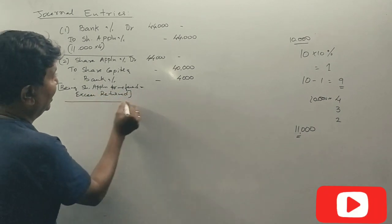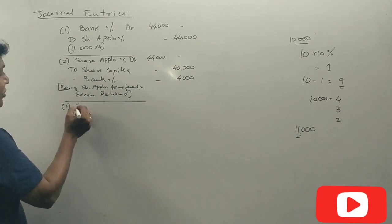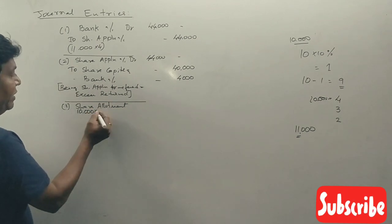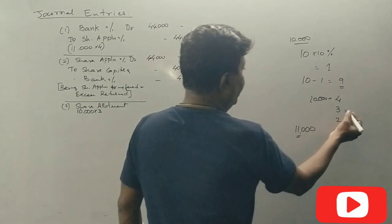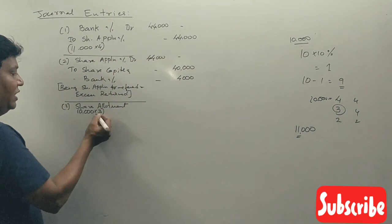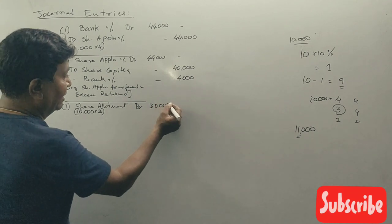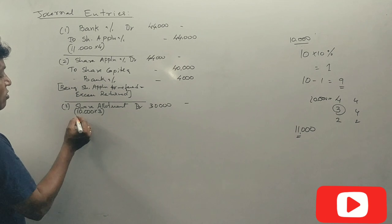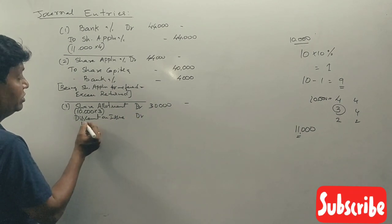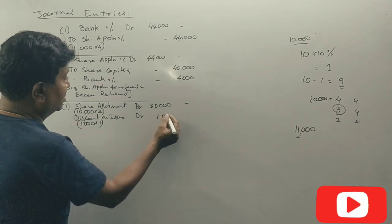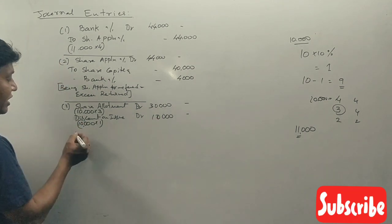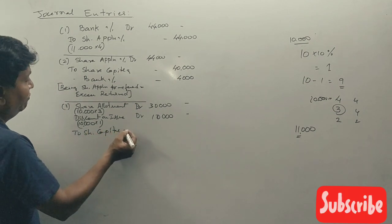Allotment stage: Share Allotment Account debit 30,000. 10,000 shares at 3 rupees per share allotment, less 4 rupees already paid equals 3 rupees. Discount on Issue of Shares 10,000 shares into 1 rupee equals 10,000. Share Capital Account 40,000. Being share allotment money due except discount.